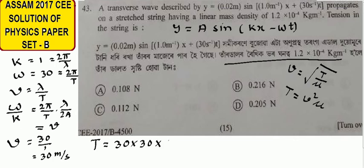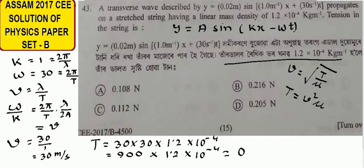This is 1.2 times 10 to the power minus 4, and 900 into 1.2 into 10 to the power minus 4. My result is 0.108 Newton, the correct option will be A.